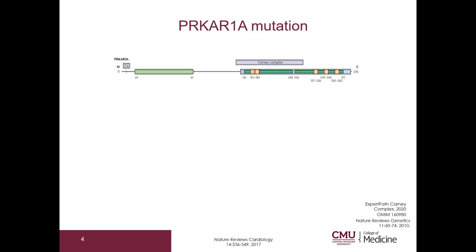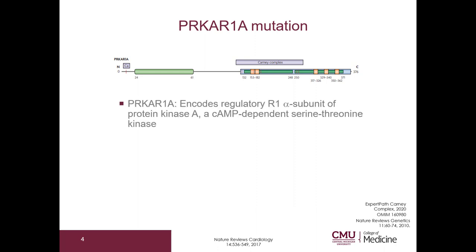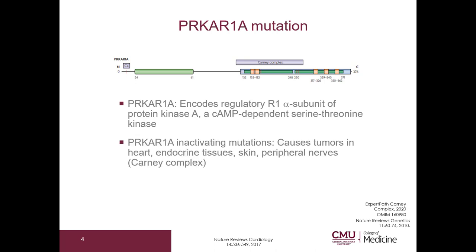This is a drawing of the PRKAR1A protein, simply to show that Carney complex mutations are located within the gene. PRKAR1A encodes a regulatory R1-alpha subunit of protein kinase A, which is a cyclic AMP-dependent serine threonine kinase. PRKAR1A inactivating mutations cause tumors in the heart, endocrine tissues, skin, and peripheral nerves, and this is clinically known as Carney complex.